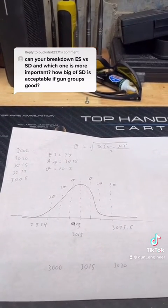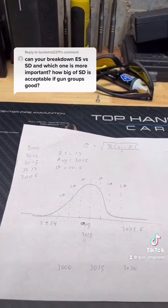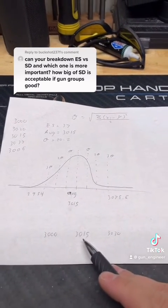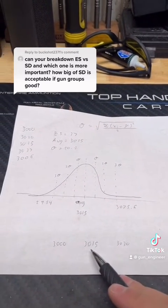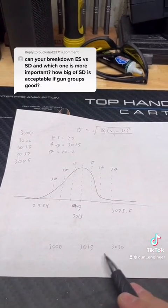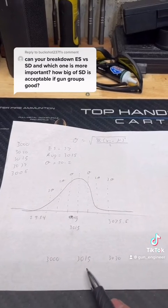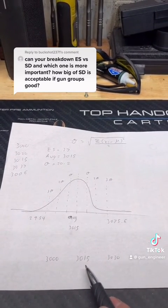So compare that to down here. I just did the numbers with an SD of 5, and that gives you a max of 3030 and a low of 3000, meaning that band of what the odds are that your bullet will be in that velocity is much smaller.